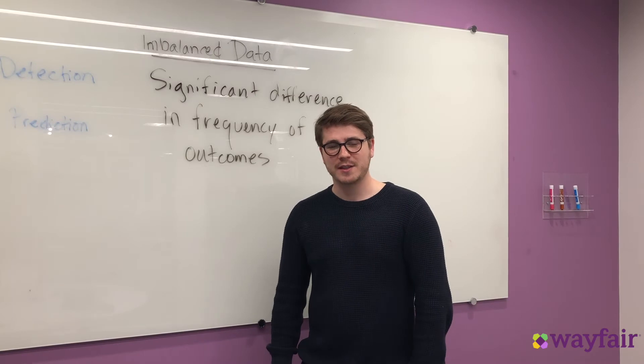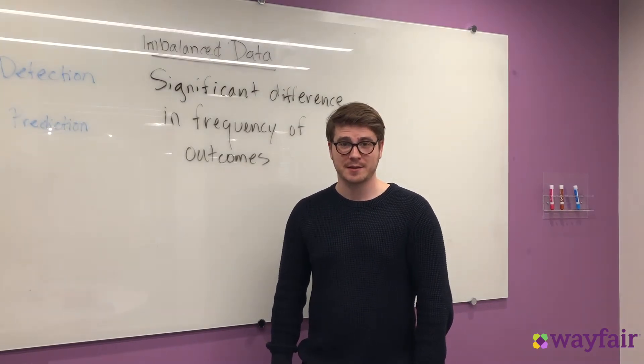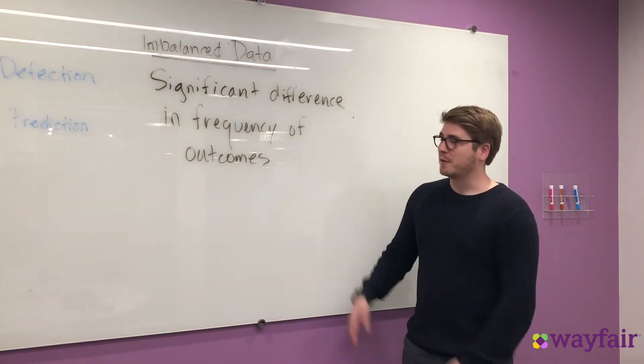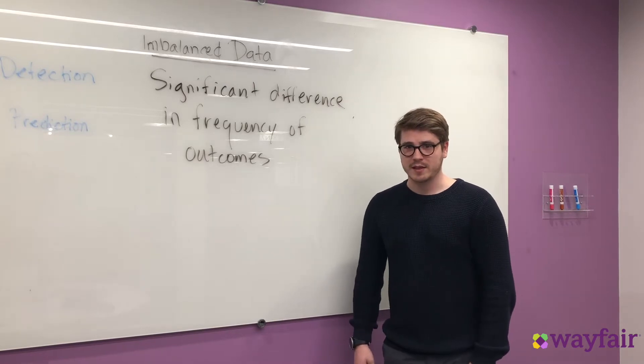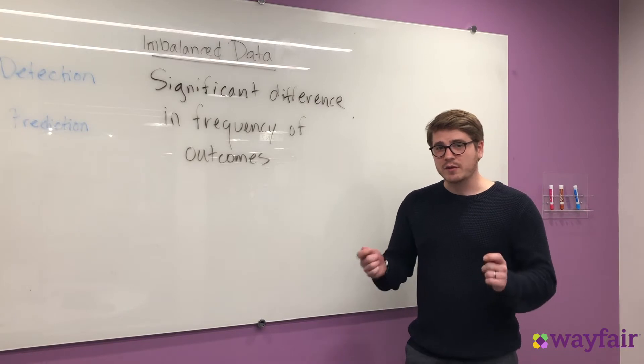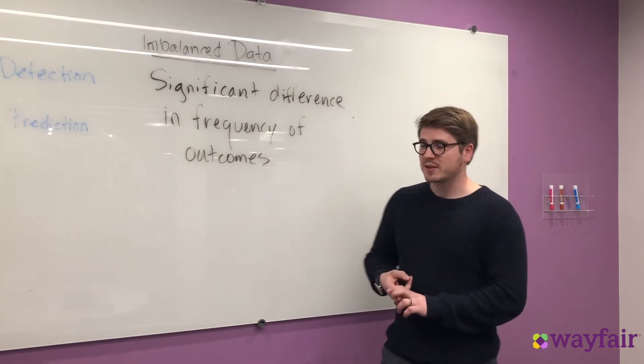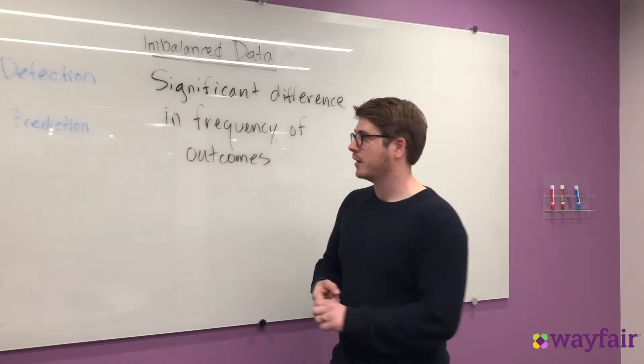Hi, I'm Trent Woodbury. I'm a senior data scientist at Wayfair and today I'd like to tell you a little bit about handling imbalanced data. First, let's define imbalanced data. My very informal definition is when you have a significant difference in the frequency of outcomes. The easiest example of this is when you have two outcomes or binary classification, and we have two specific examples of binary classification with highly imbalanced data right here.